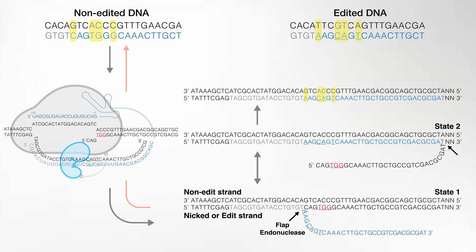Looking closely at State 2, the four edit positions form a mismatch bubble, meaning mismatch repair can start. There are two possibilities: if the top strand — the non-edit strand — is used as a template for repair, the new information is replaced with the original sequence and the cell returns to starting DNA. But if mismatch repair uses the edit strand as the template, the top strand is resynthesized and the edits become permanent in the genome. In this process there are many branching points, making this method seem inefficient, and the flap equilibration cannot be controlled by current methods.